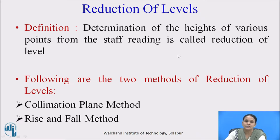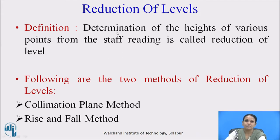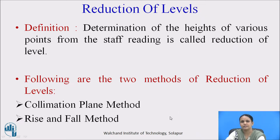Reduction of levels: Determination of the heights of various points from the staff reading is called as reduction of level, or it is called as the reduced level. To measure the heights of various points on the earth surface, we use the dumpy level and the leveling staff. Whatever height we measure on the leveling staff is called as the staff reading. We have two methods of reduction of levels: the collimation plane method and the rise and fall method.